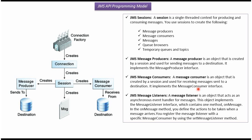A MessageListener is an object that acts as an asynchronous event handler for messages. A MessageListener object implements the MessageListener interface. It has one method called onMessage, in which we define what kind of action to take when a message arrives. We can register the MessageListener with a MessageConsumer by calling the setMessageListener method.